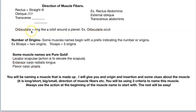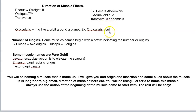Then there's the word 'orbicularis.' You have two muscles you'll be learning right away with this term. Look for 'orbit' in it — it goes around in a circle, like an orbit around a planet. So orbicularis oculi: 'oculi' stands for ocular, which is eye — a ring-like orientation of those muscle fibers around the eye. And orbicularis oris — the same thing: a ring-like orientation around the mouth.